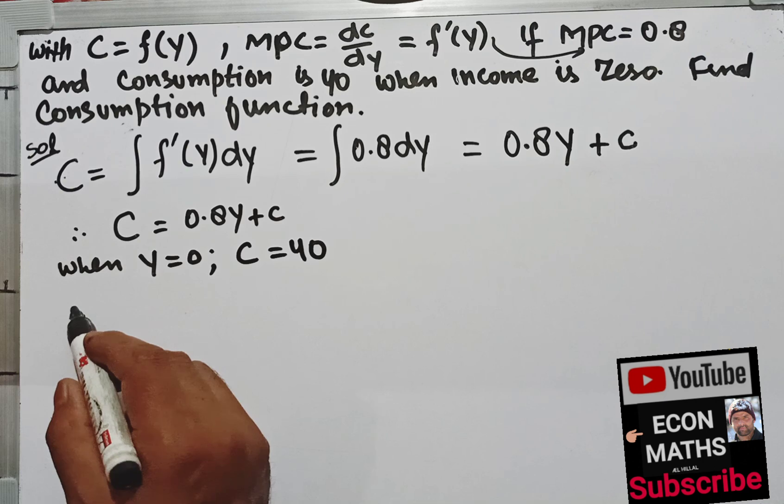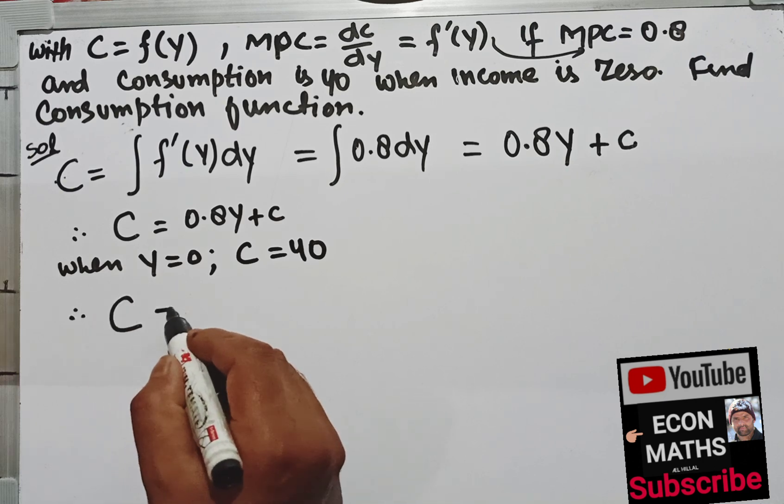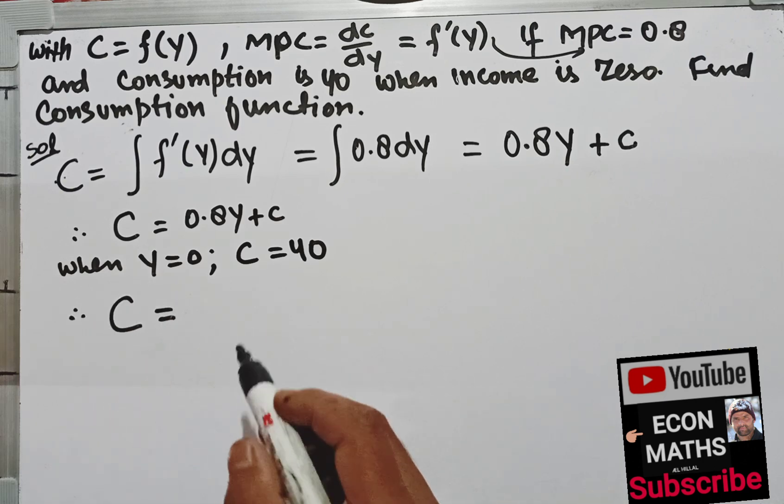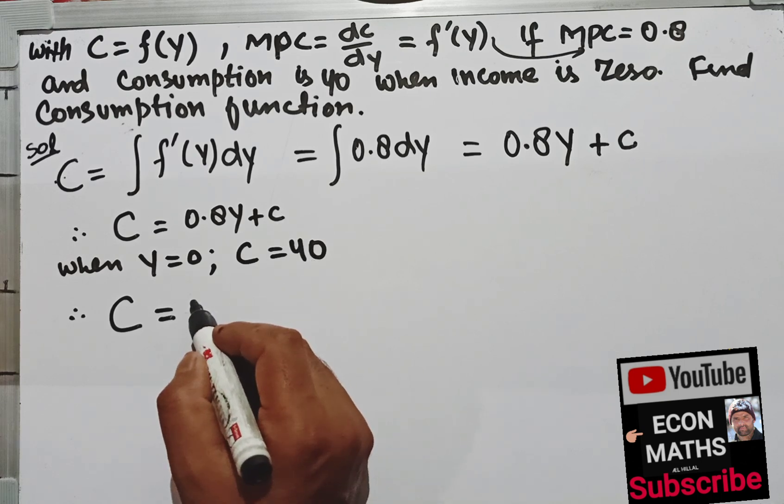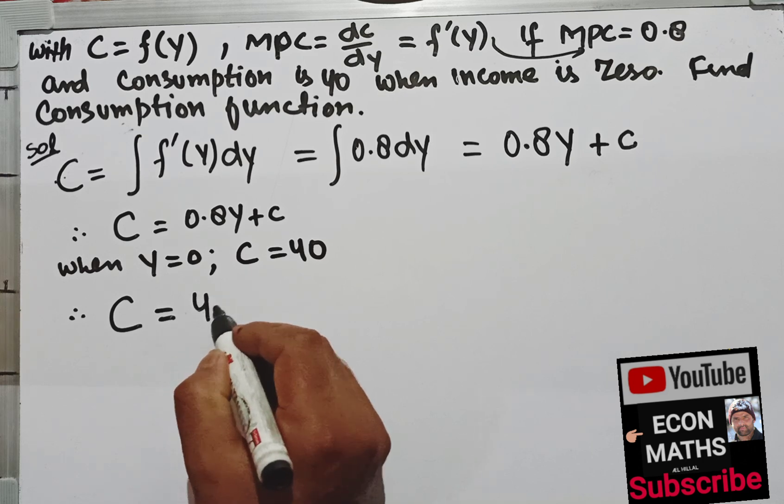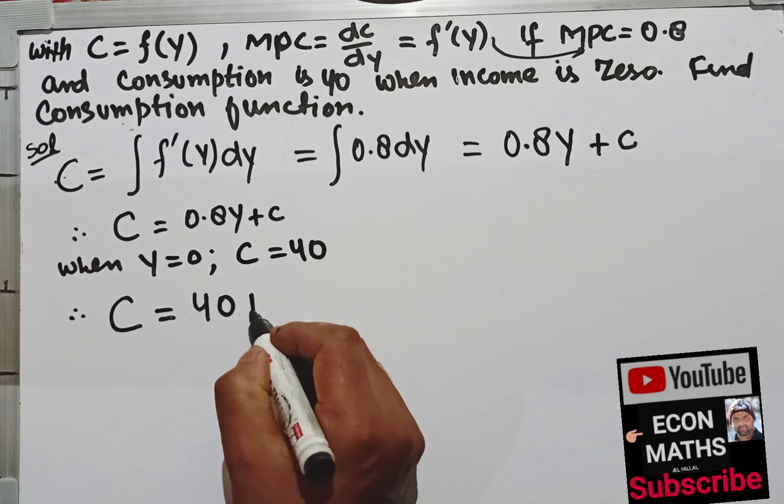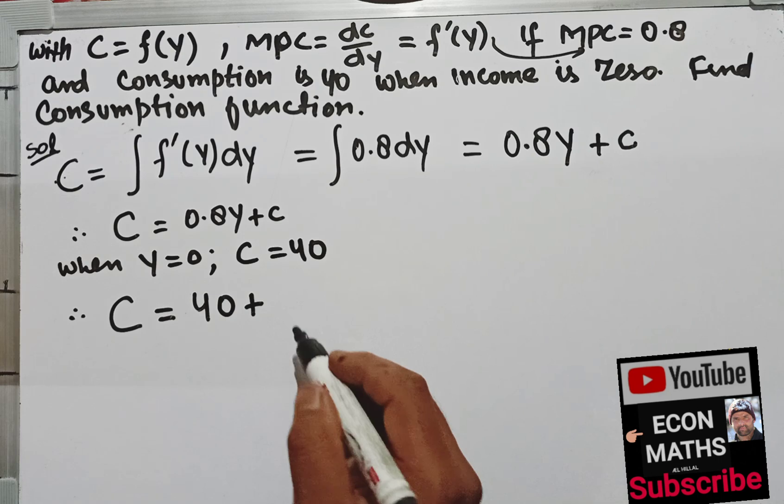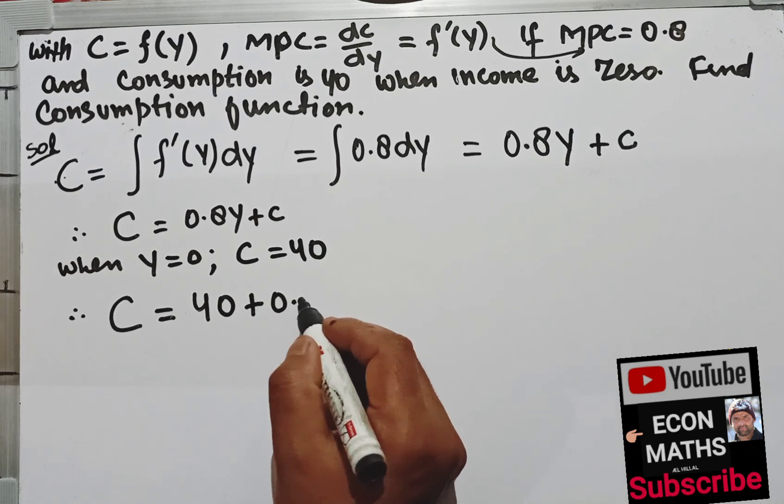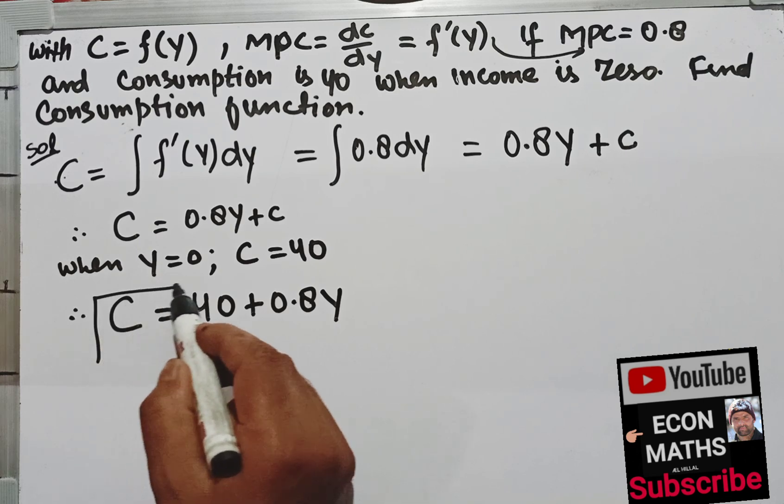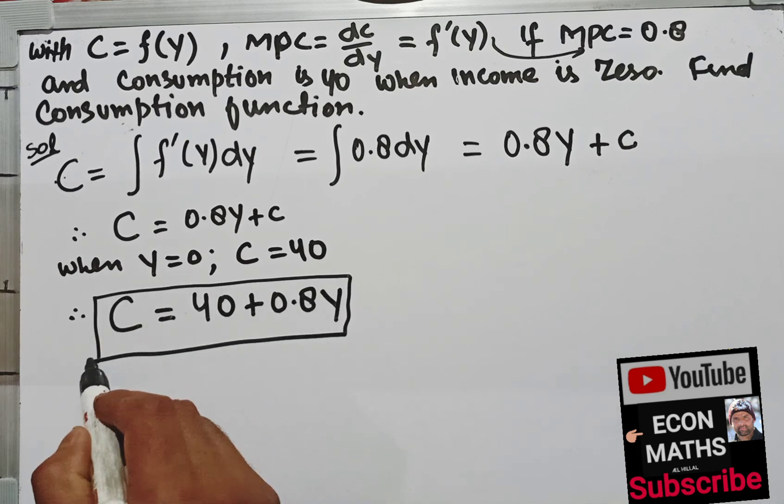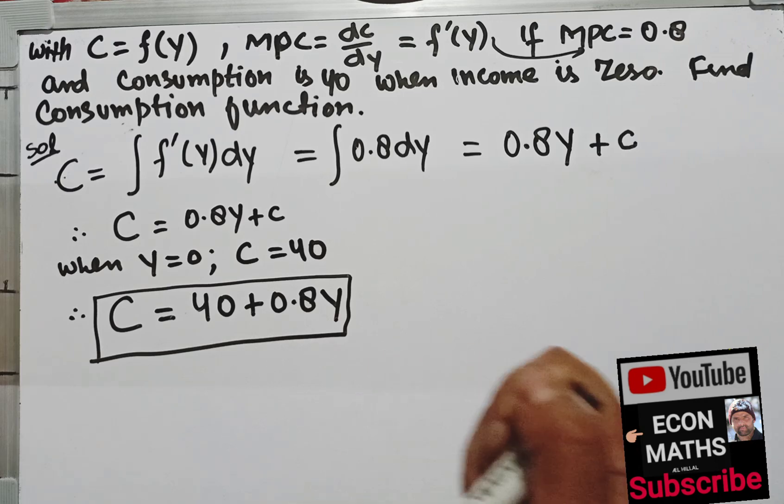Therefore the consumption function will be equal to... that is the value of c is 40, so I will write 40 plus 0.8y. So this is the consumption function which we have derived from the marginal propensity to consume.